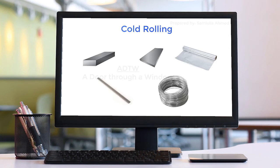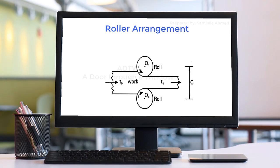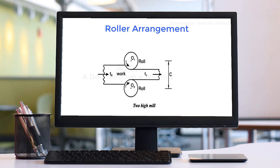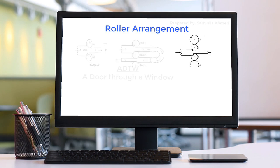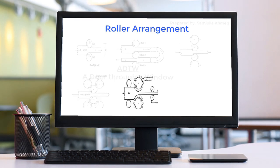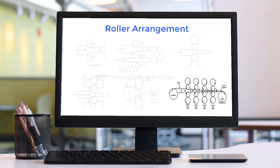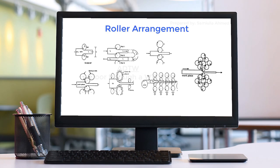Rolling can also be classified based on roll arrangement. The minimum number of rolls required is two. Arrangements include: two-high, three-high, four-high, cluster, planetary, tandem, and Sendzimir roll mills, each offering different degrees of reduction. The greatest reduction in material is obtained with more complex mill configurations. This covers the rolling process classification.